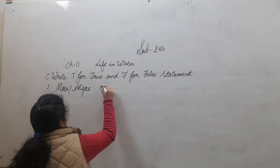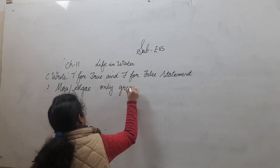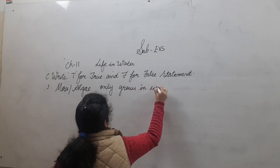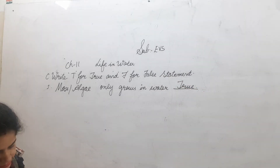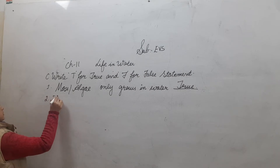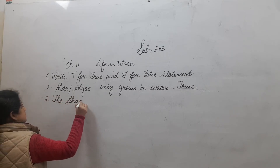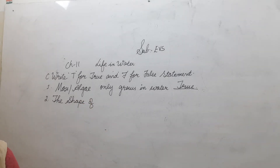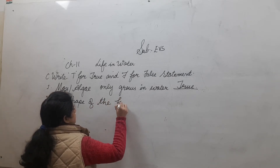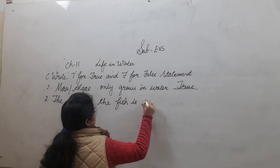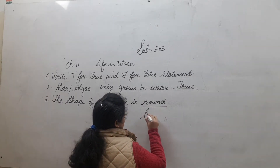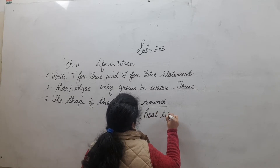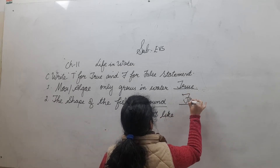One: moss or algae only grows in water. The answer is true. Second: the shape of the fish is round. Is the shape of fish round? No. What is the shape? It is a boat-like shape. So the answer is false.